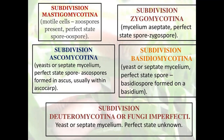Second subdivision, Zygomycotina: mycelium is aseptate; perfect state spores are zygospores. Third subdivision, Ascomycotina: yeast or septate mycelium; perfect state spores are ascospores formed within asci. Fourth subdivision, Basidiomycotina: yeast or septate mycelium; perfect state spores are basidiospores formed on basidia. Fifth subdivision, Deuteromycotina or Fungi Imperfecti: yeast or septate mycelium; perfect state absent or unknown.